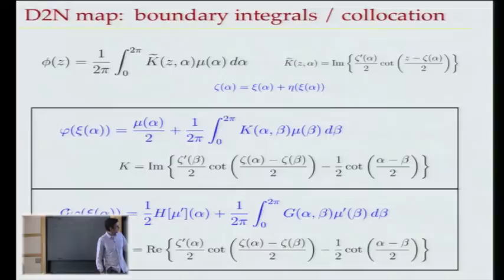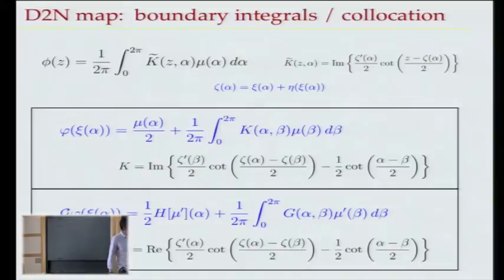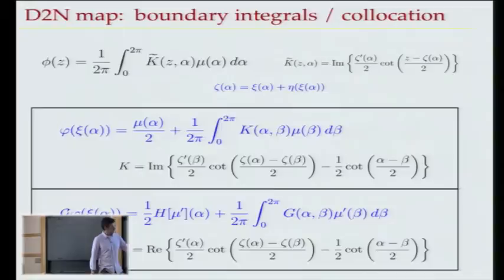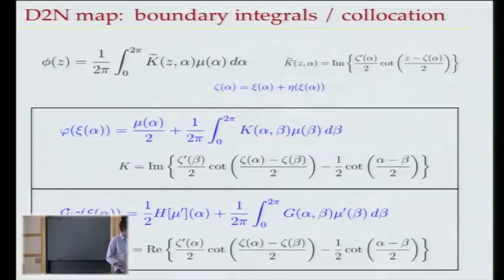Once you've solved for mu, you can compute G*phi by taking a derivative as you approach the boundary. Beta becomes alpha, the imaginary part becomes real part. Instead of one-half, you end up with a Hilbert transform. So the procedure is: given phi, solve for mu, differentiate mu, plug it into the Hilbert transform, integrate against a slightly different kernel, and you get G.